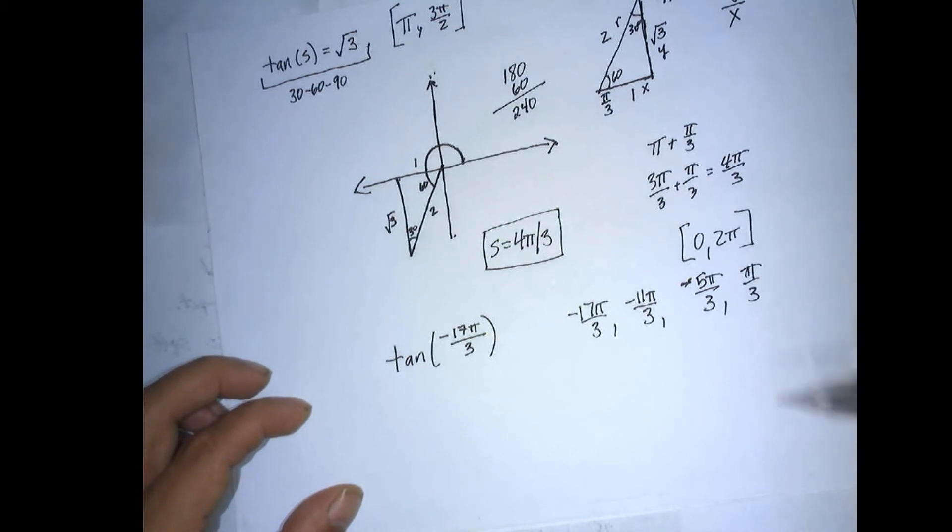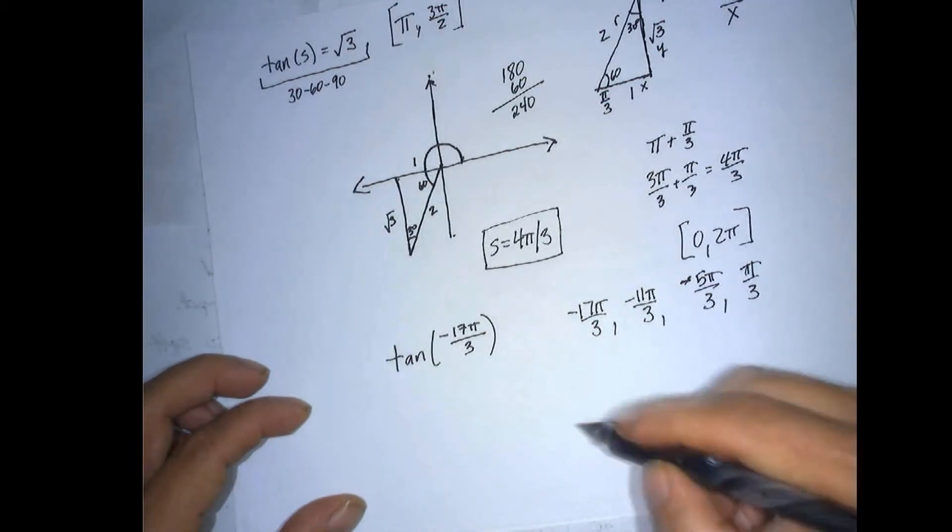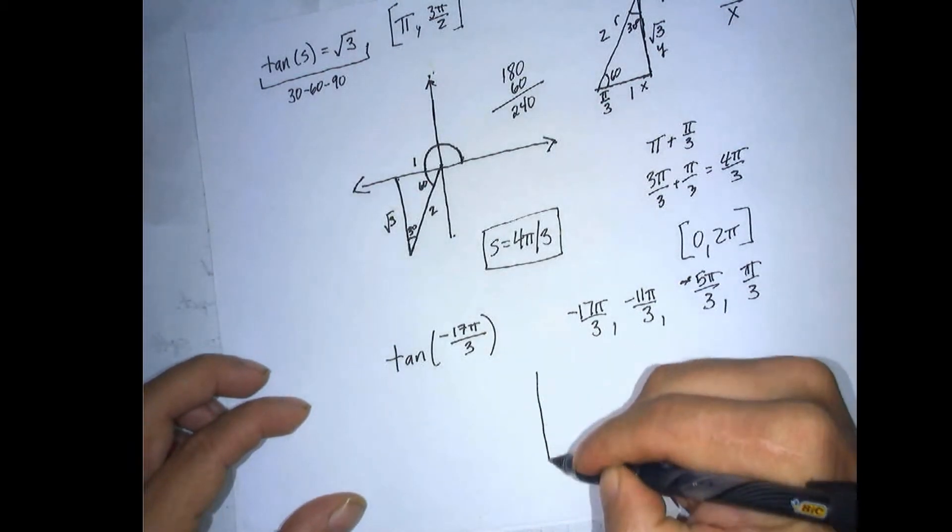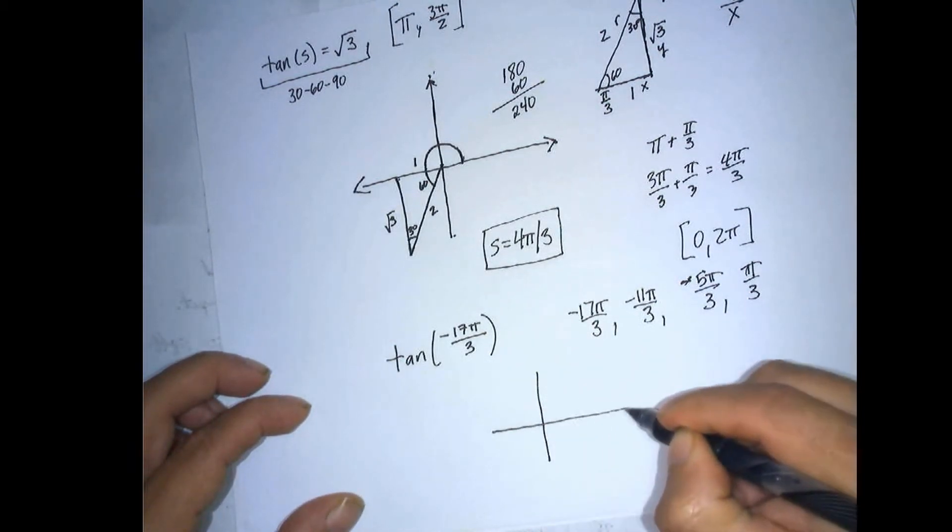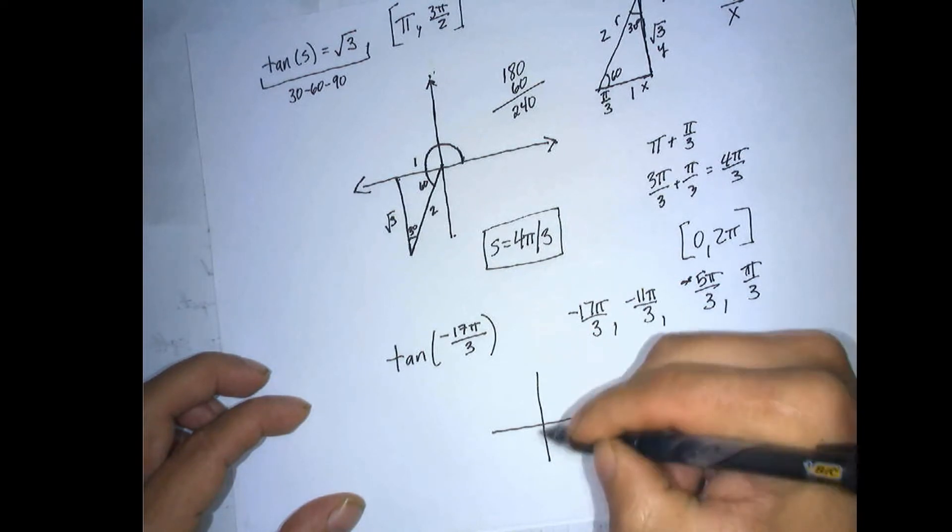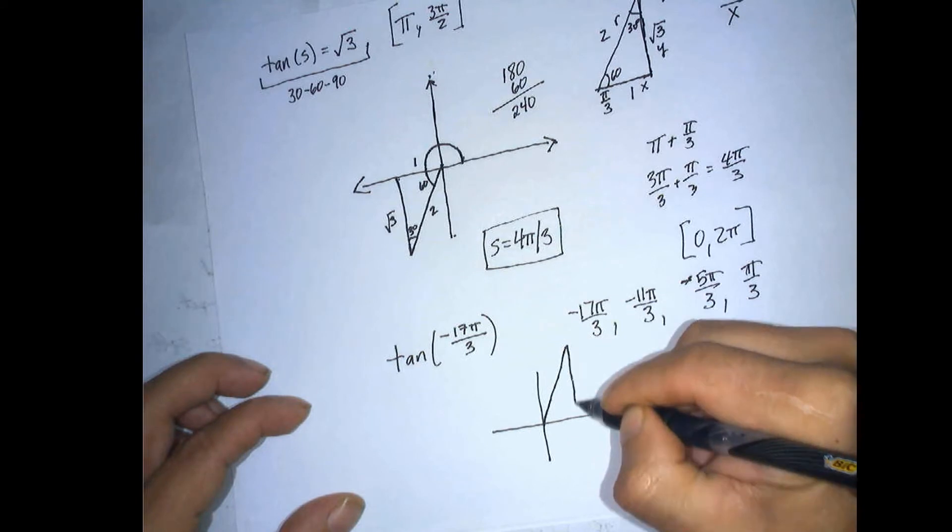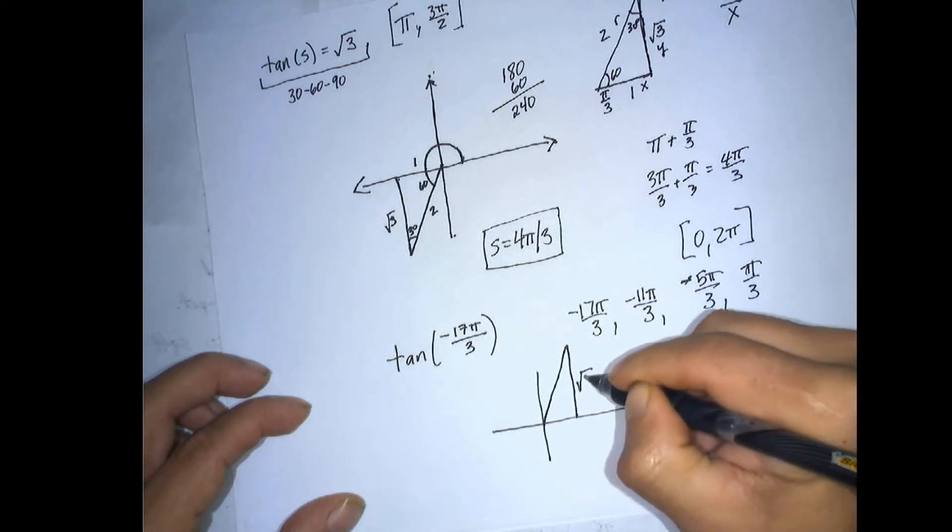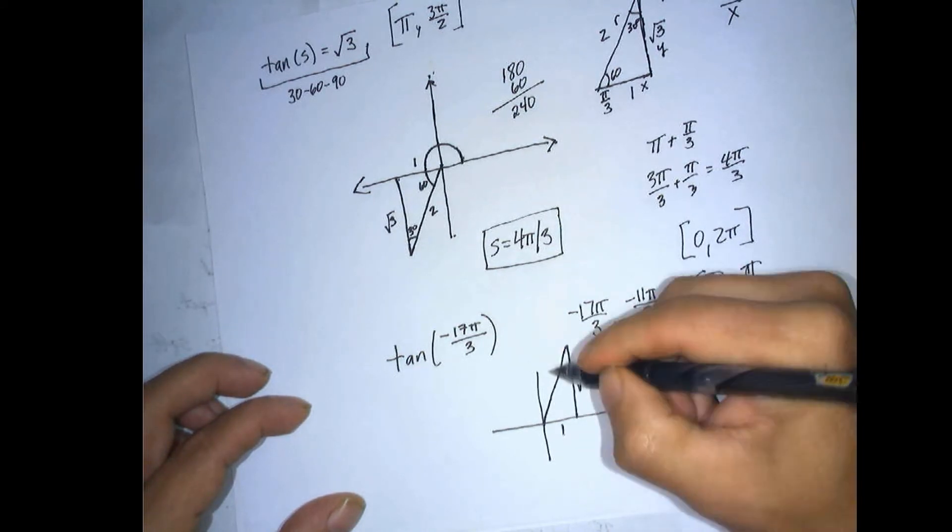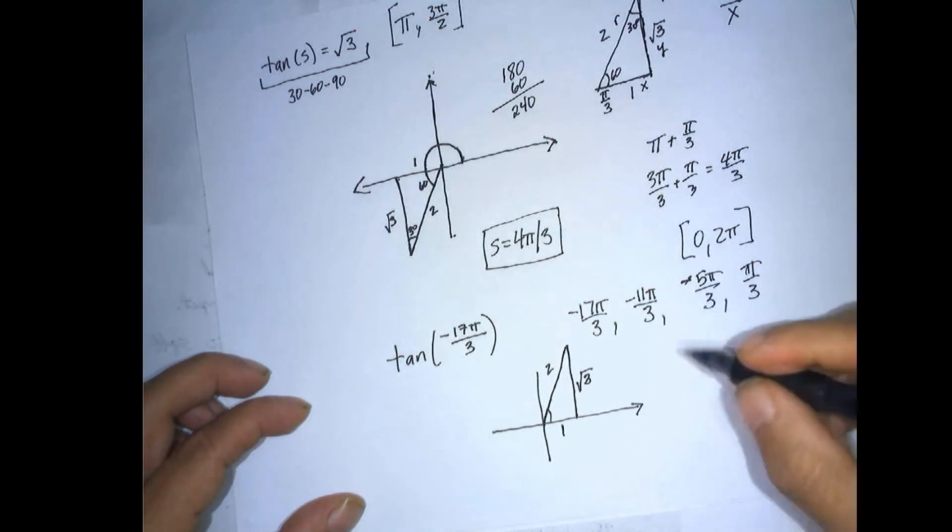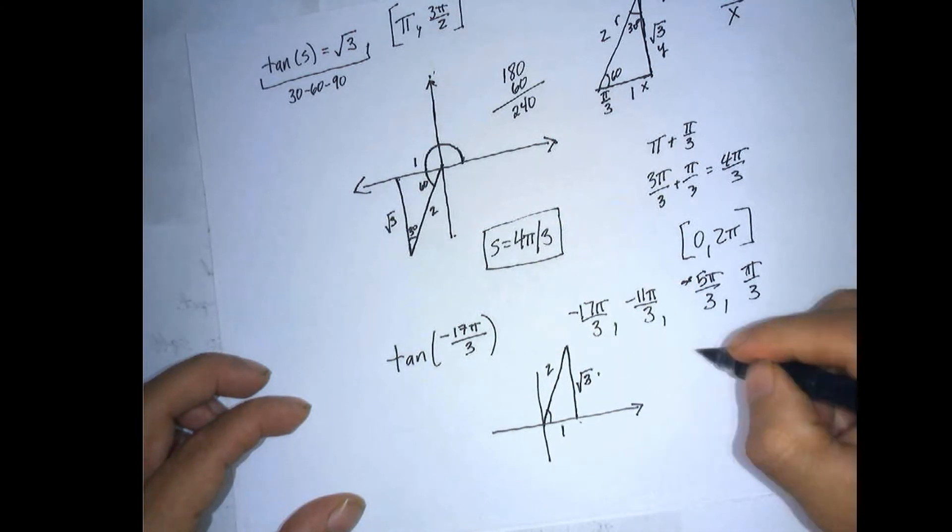Okay, so now we need to find the exact value of tangent pi over 3, which is 60 degrees. So here's our triangle again. And this is square root of 3. This is 1. This is 2. And opposite over adjacent is square root of 3.